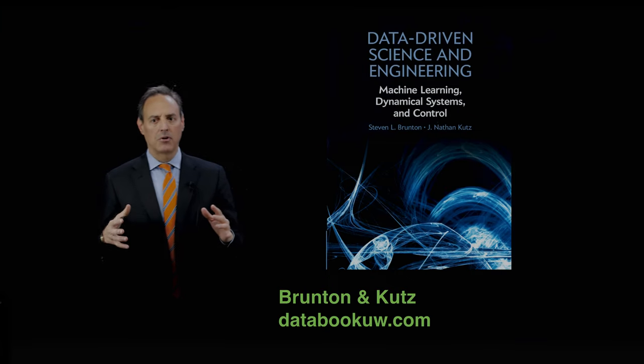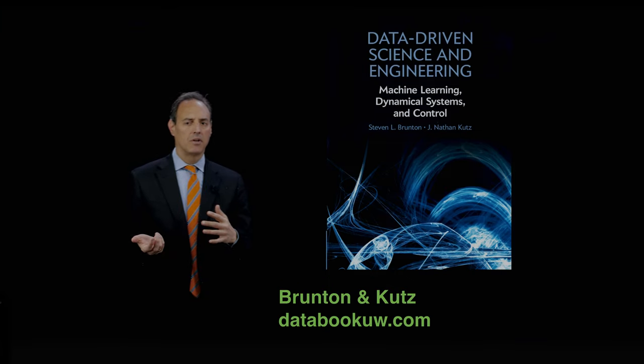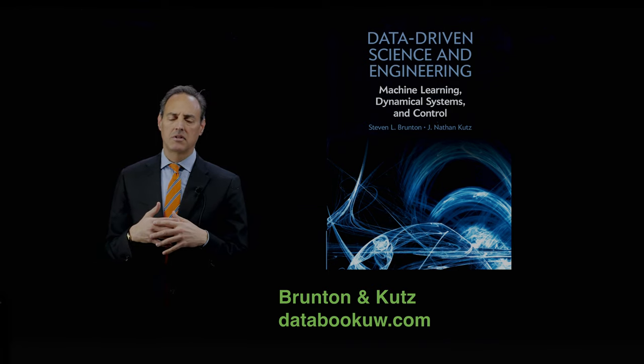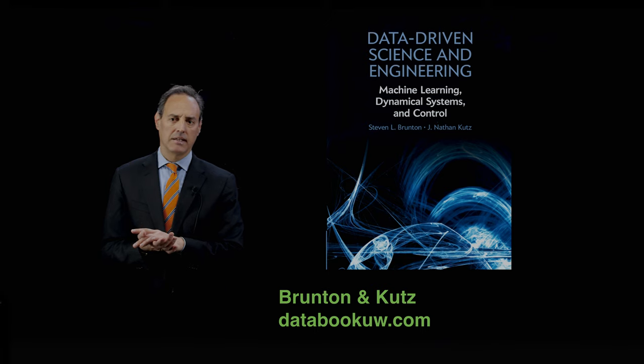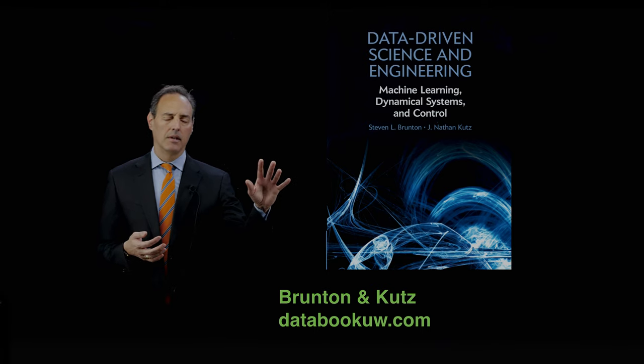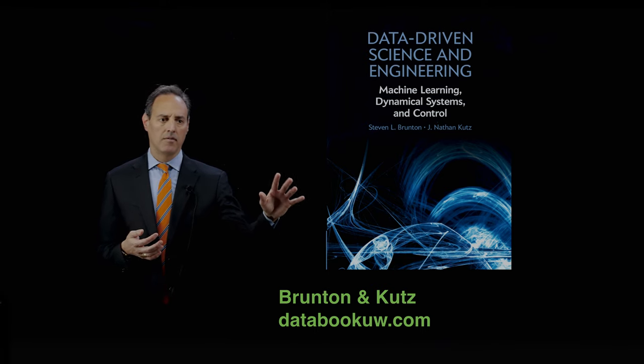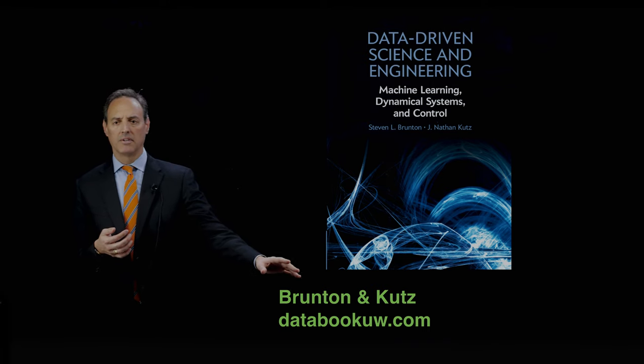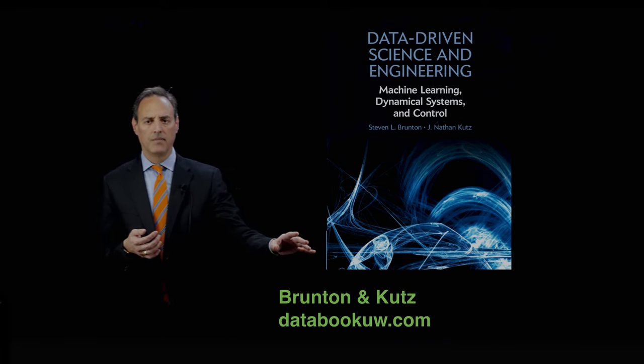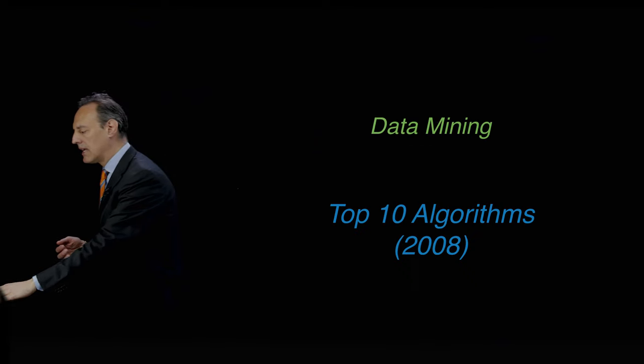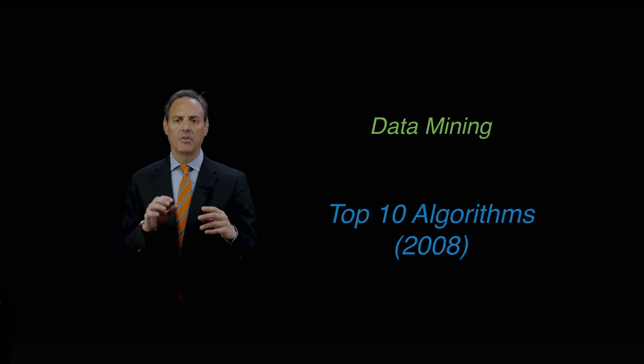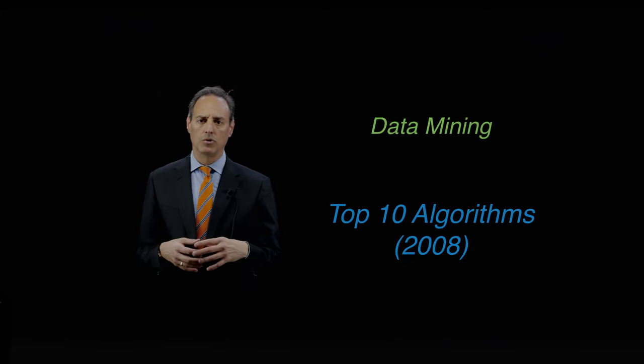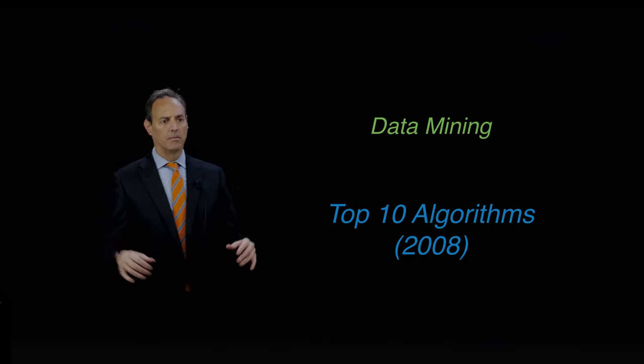I want to wrap up the chapter on clustering classification by talking a little about an overview of data science and some of the top algorithms used in data science in general. This is out of section 5.9 of the book Data-Driven Science and Engineering, Brunton & Kutz. You can find all this at databookuw.com. Mainly the idea now is to talk about when we think about data mining and using data analysis tools, what are the dominant tools available to us?